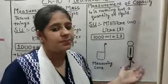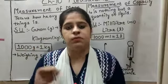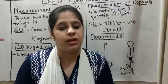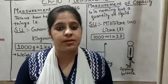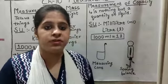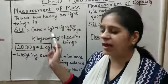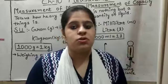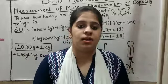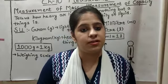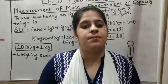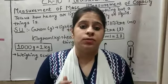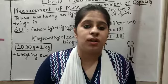So we studied about measurement of mass — mass is basically weight — and measurement of capacity, which is nothing but the amount of liquid. We also studied the standard unit of measurement of mass and the standard unit of measurement of capacity. We discussed these two topics in this class. In the next class we will discuss the next two topics. I hope you understood the chapter — read the chapter and if you have any doubt, write in the comment section. Thank you, class.